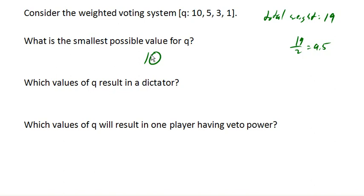What values of the quota will result in a dictator? Remember, we get a dictator whenever the quota can be reached by any player by themselves. In this case, with weights 10, 5, 3, 1, keep in mind that the smallest possible value for the quota is 10. If our quota was 10, then player 1 would be a dictator because player 1 can reach the quota all by themselves. So certainly 10 is an answer.